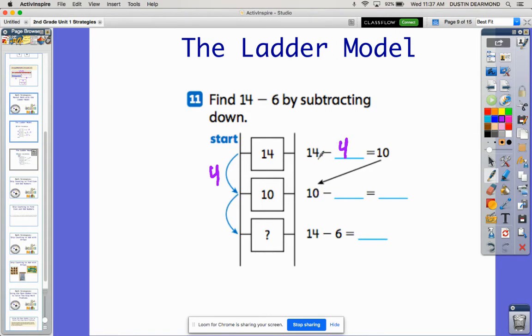Take away the four and jump back to ten. But now I have to jump a total of six. I've only jumped four, so I need to jump two more. I have to take away two more, and that takes me from ten down to eight.